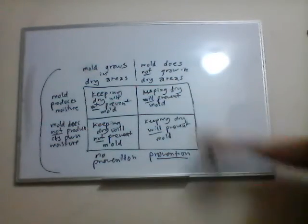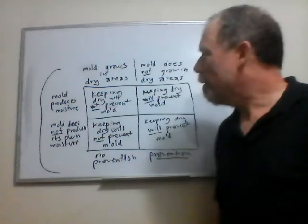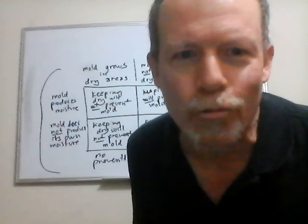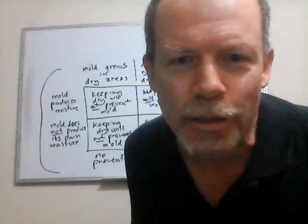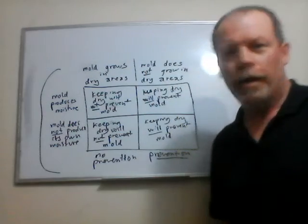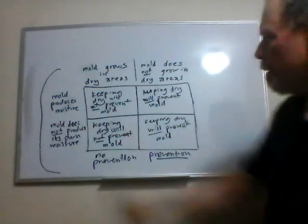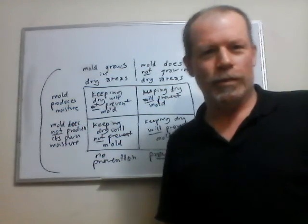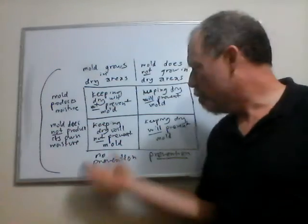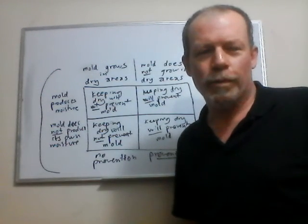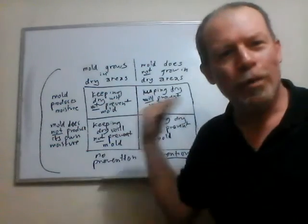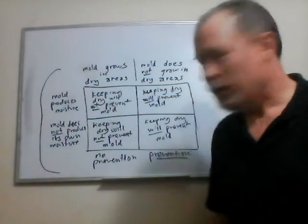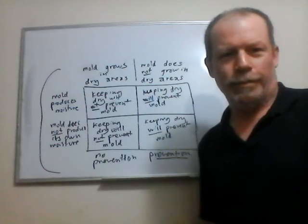Over here: mold does not grow in dry areas. If it does not grow in dry areas and it produces its own moisture — it can't produce its own moisture if it does not first grow. If you keep it dry, it will never get a chance to produce its own moisture. So keeping dry apparently makes a difference over here. Mold does not grow in dry areas, mold does not produce its own moisture — and again, why would it need to if it never gets a chance? So if it grows in dry areas, you're not going to be able to prevent it regardless of whether it produces its own moisture or not. If it does not grow in dry areas, you can prevent it whether it produces its own moisture or not. The variable that you control is contingent upon this variable, not on that one.